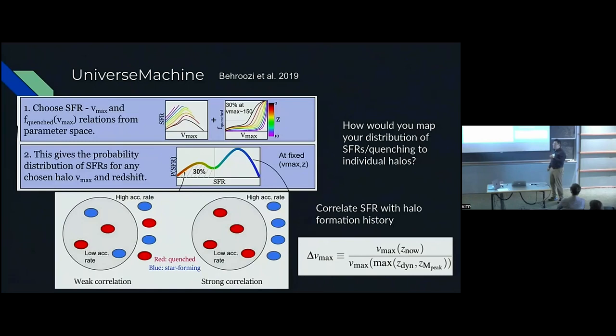The next step is once you have a PDF at every redshift and halo mass scale, you need to map them onto individual halos. Peter found this was a very good and flexible scaling that measures the recent halo accretion status over some either dynamical timescale or the time since your peak halo mass.